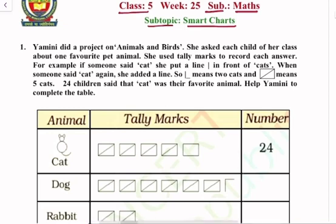She used tally marks to record each answer. For example, if someone said cat, she put a line in front of cats. When someone said cat again, she added a line. So one and two means two cats, and one, two, three, four, and five - this box means five cats. Twenty-four children said that cat was their favorite animal.